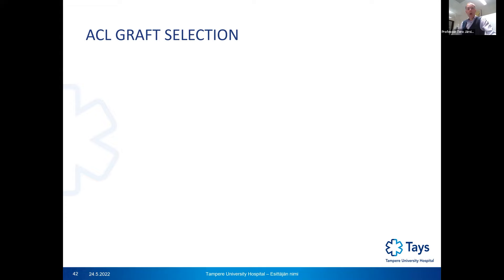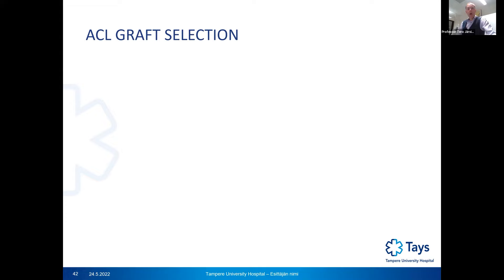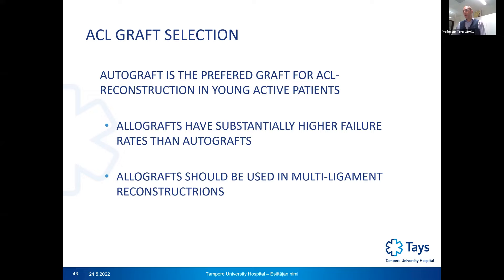Regarding graft selection for ACL reconstruction: autograft is the preferred choice, especially in young active patients. Allografts have substantially higher failure rates than autografts and are also more expensive. Allografts should be considered for multiligament reconstruction of the knee joint, where they can be used to reconstruct some of the ligaments ruptured in a multiligament knee injury. The big question is whether to use hamstring or bone-tendon-bone from the middle of the patellar tendon.